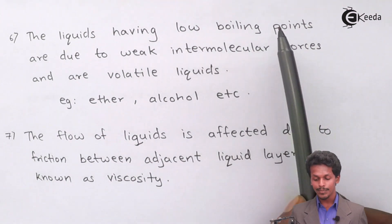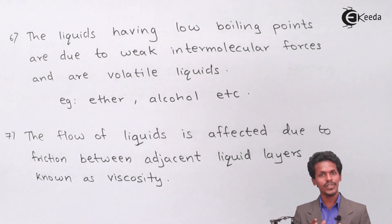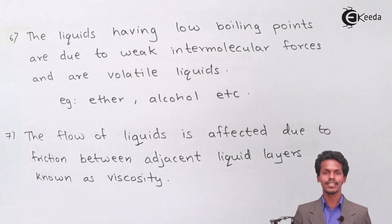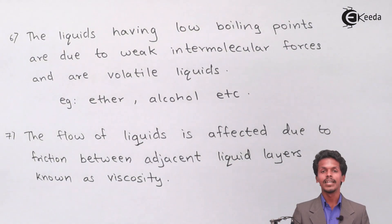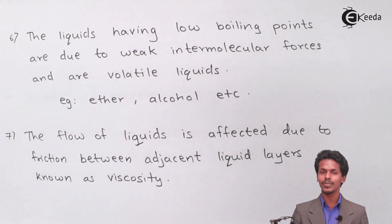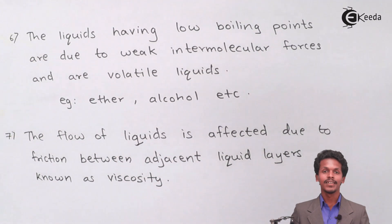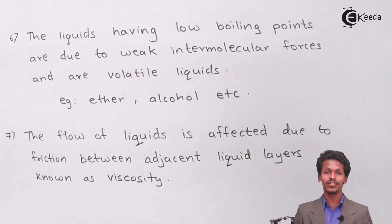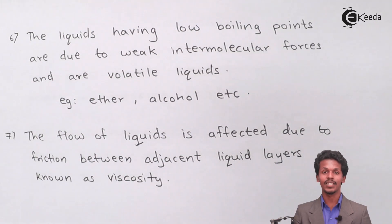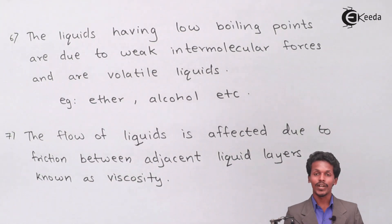Sixth: liquids with low boiling points due to weak intermolecular force of attraction are known as volatile liquids. Examples include ether and alcohol, which have boiling points less than 60–80°C. Weak intermolecular forces allow them to boil easily at lower temperatures. Volatile liquids are dangerous — trucks transporting them carry warnings because these liquids can easily catch fire.